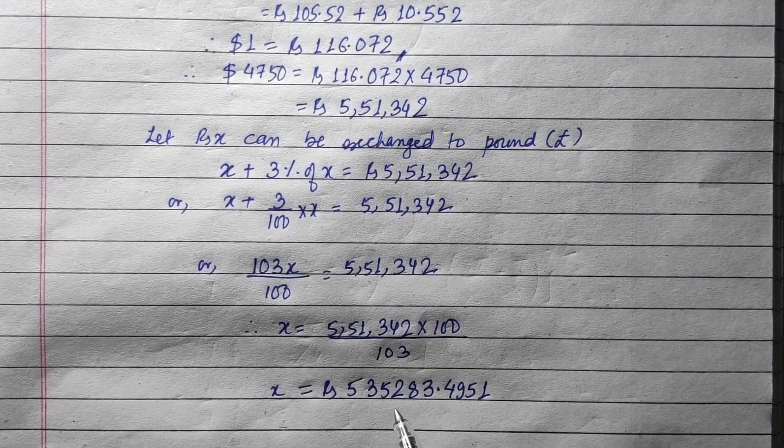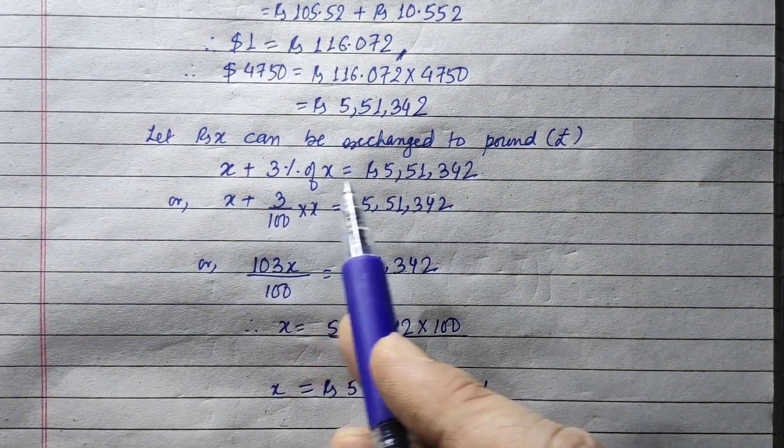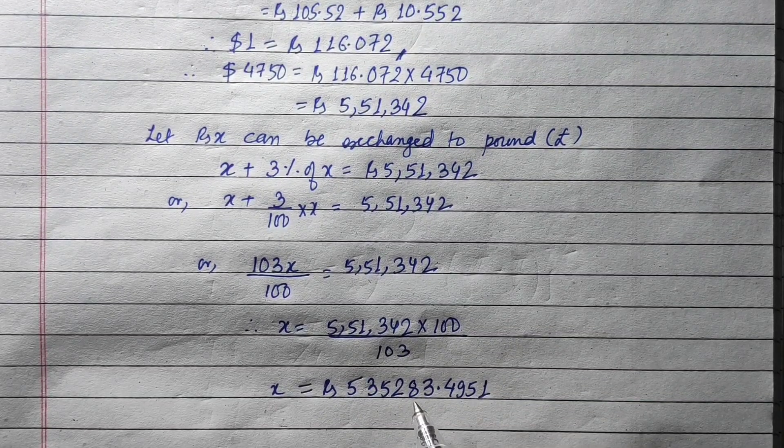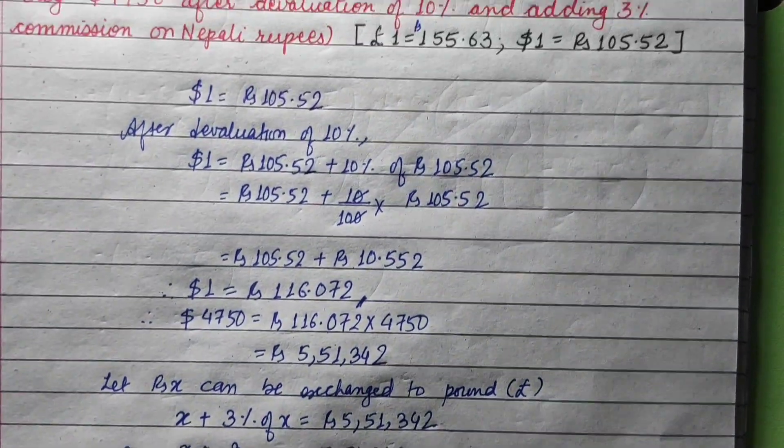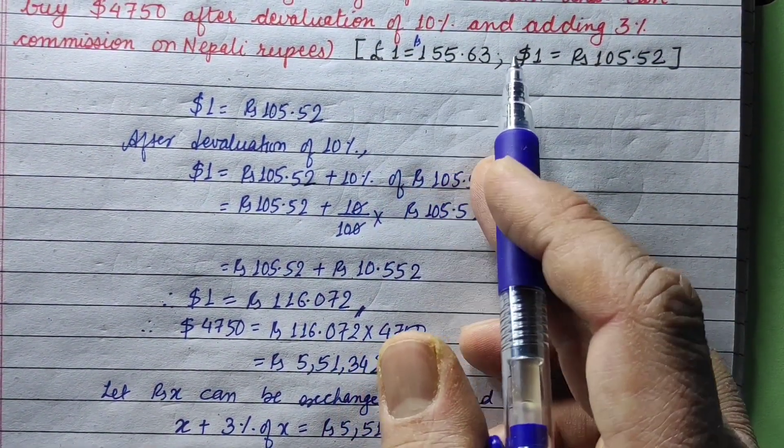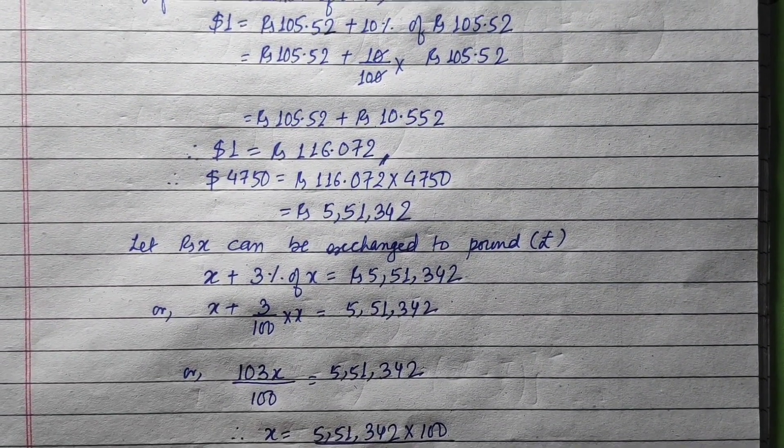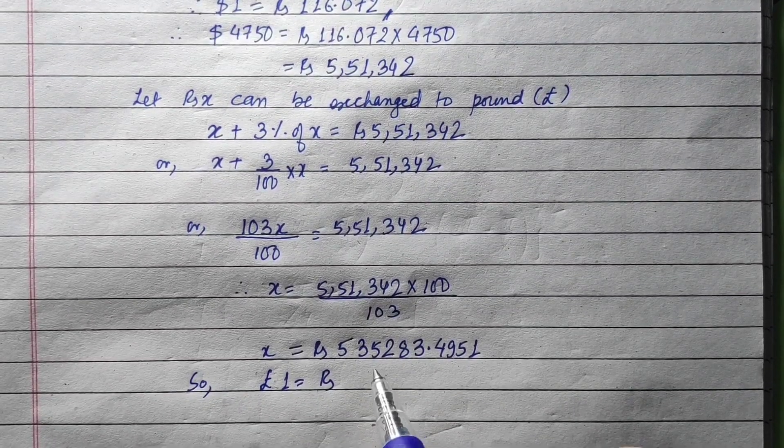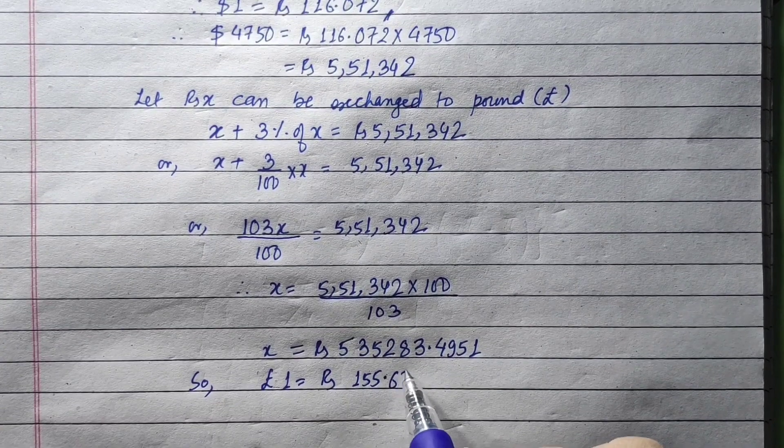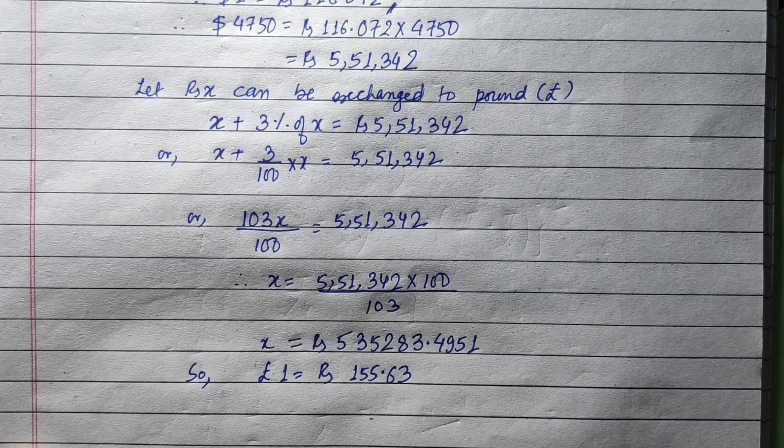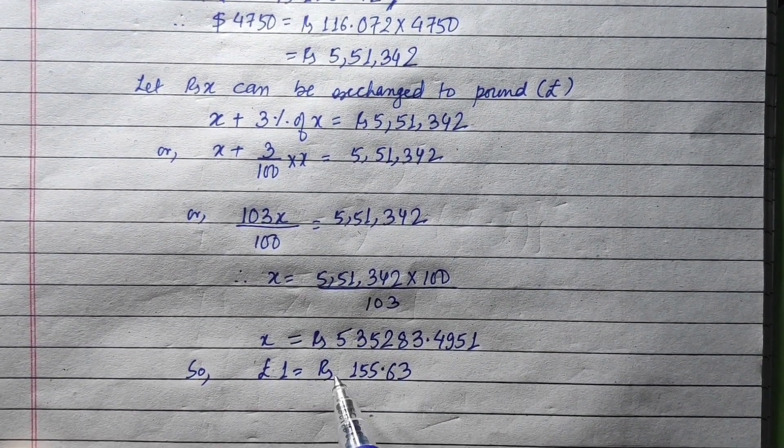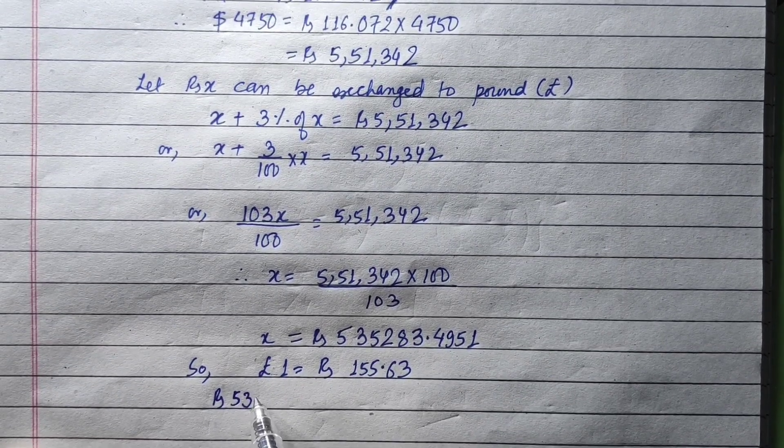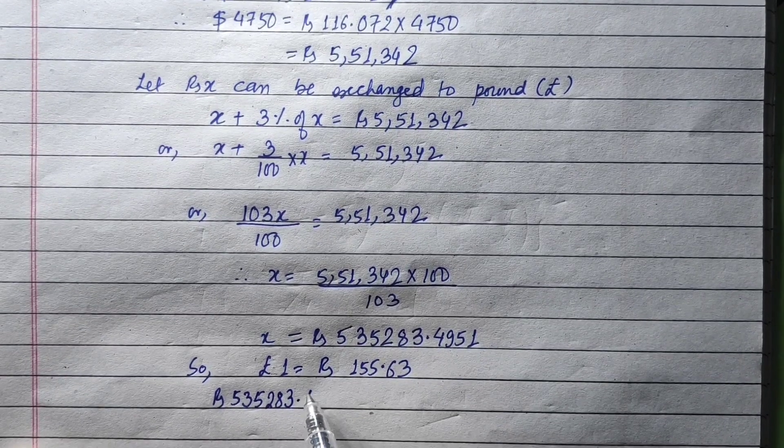So the amount is Rs. 5,35,283.9541. This is the amount when 1 pound equals rupees 155.63.